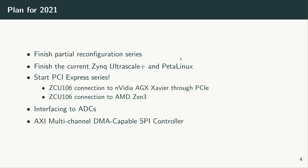I want to finish the two series I started in 2020 about partial reconfiguration and this series on Zynq UltraScale+ and PetaLinux, with a few more videos remaining. Then I want to start some videos on PCI Express design using the ZCU106 board and the NVIDIA Xavier AGX. I will also have videos on interfacing with ADCs and will talk about a new IP I've been working on: an AXI multi-channel DMA-capable SPI controller.